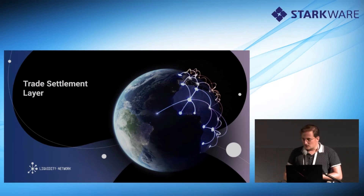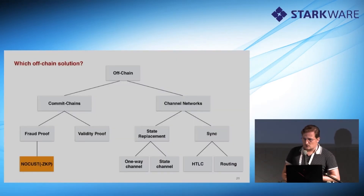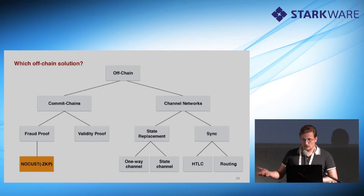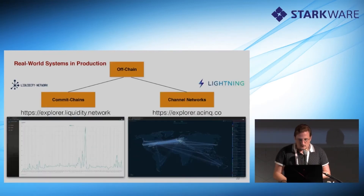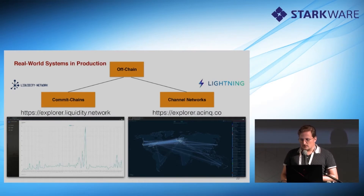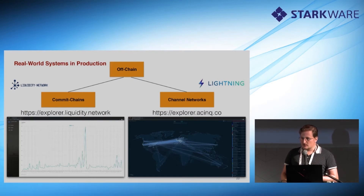Now, what about the trade settlement layer? Once we have found two matching trades, we want to settle them. There are many solutions out there — the broad categories would be channel networks and commit chains. Commit chains can be fraud-proof-based or validity-proof-based. We settled with NoCust because we developed NoCust, and NoCust also has a zero-knowledge version. Looking at real-world systems in production: there's Lightning, but we couldn't see how to do atomic trades or build a DEX on the Lightning network. The Liquidity Network implements and runs the NoCust protocol in production since March this year.